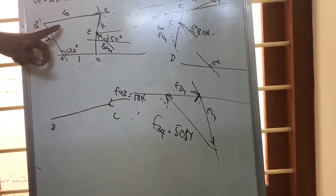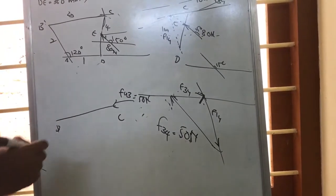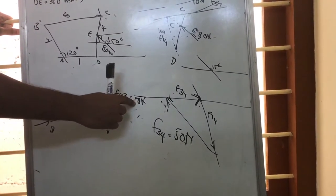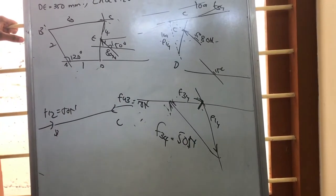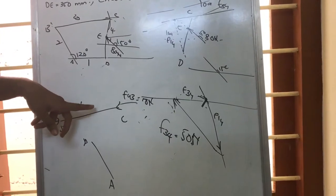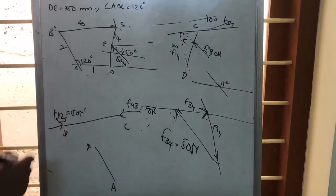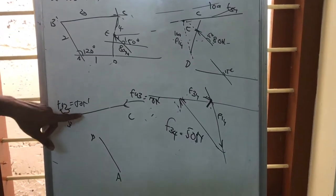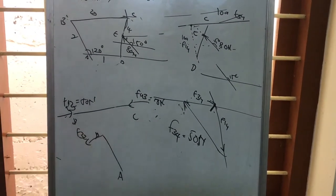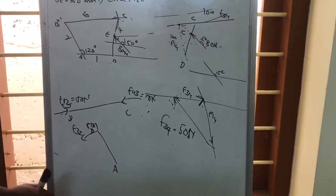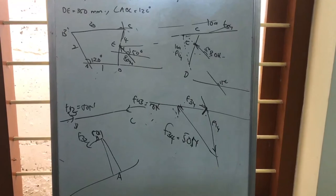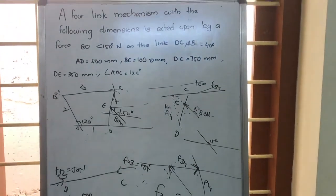Since BC is a two-force member, at end B there is force F12 — force on link 2 exerted by link 1. That would be opposite to F43 but of the same magnitude, 50 Newton. Considering link AB: on link 3 there is a force of 50 Newton, and on link 2 a force F32 acts exactly opposite to F23, also 50 Newton. To find the couple or torque, draw a line parallel to this force, find the perpendicular distance, and calculate the couple. This is how we get the torque on link AB.